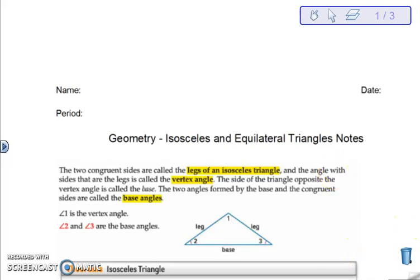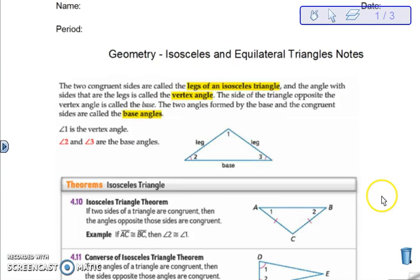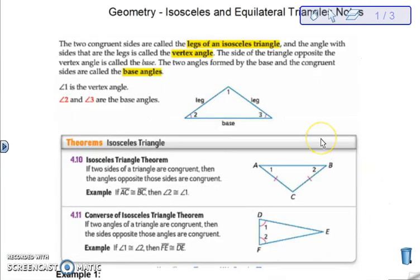Welcome. Today we are talking about equilateral triangles and isosceles triangles. Of course, an isosceles triangle is any triangle with at least two equal sides.